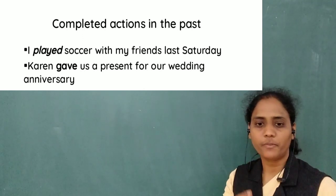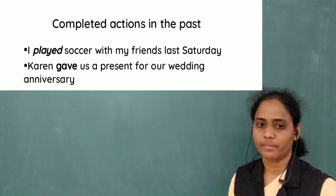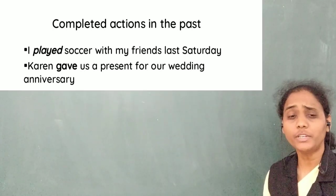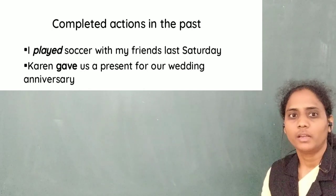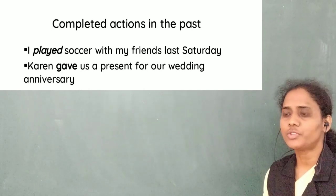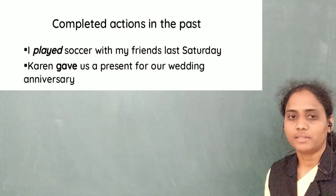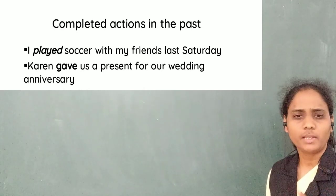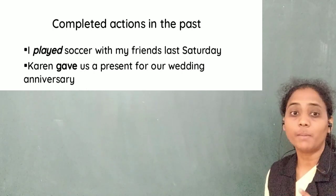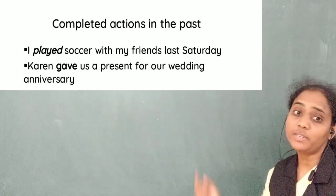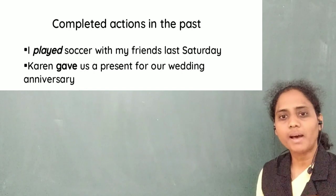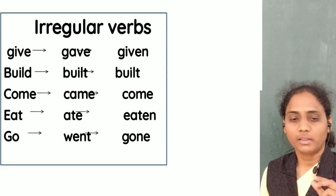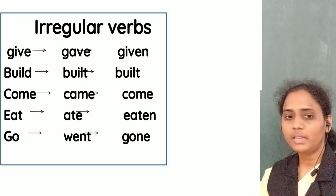The verb in the first sentence is 'play'. We make the past verb by adding '-ed' to it. We do this for most verbs. But some verbs have special past forms. You see that in sentence number 2, the verb is 'gave'. This is the past tense of the verb 'give'. We say give, gave, given.